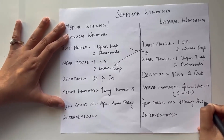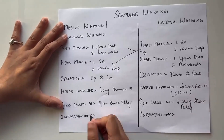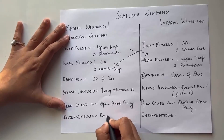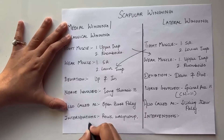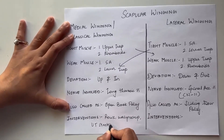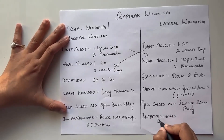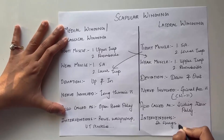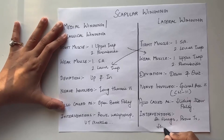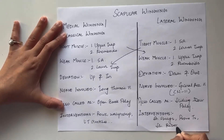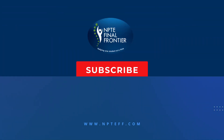For interventions in medial winging, some examples are rows, wall push-ups, and upper trap stretches. For lateral winging, the main interventions are shoulder shrugs, prone tees, and shoulder retractions.